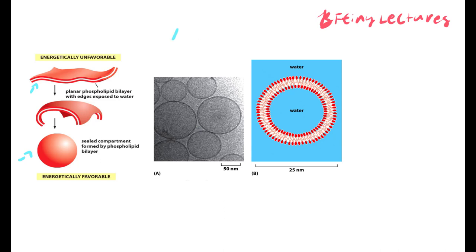Water interacts with the polar heads of the phospholipids, while the nonpolar region is hidden away and not interacting with the water. When you drop oil in water, you form a circle. Sometimes you won't have a bilayer — you'll have a monolayer. This only happens if the internal substance is nonpolar.